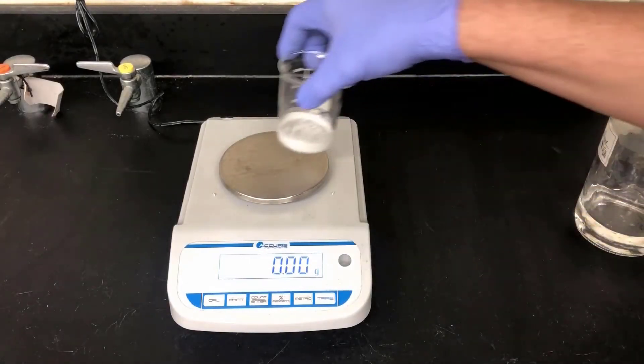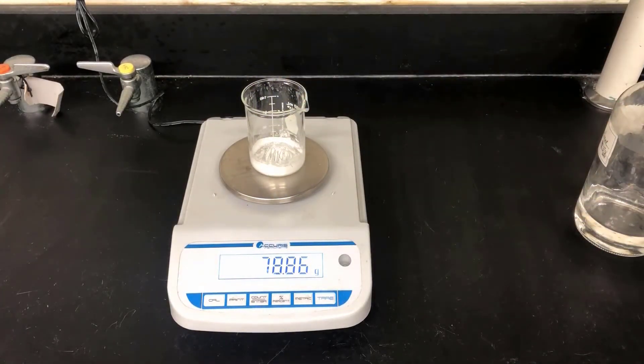Now I'm getting the mass of the beaker with the caffeine in it. I know the mass of this empty beaker from before, so by difference I can get the mass of the caffeine.